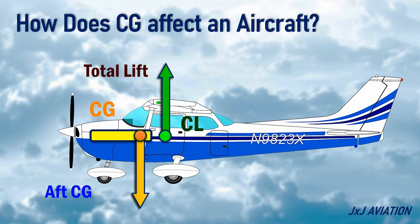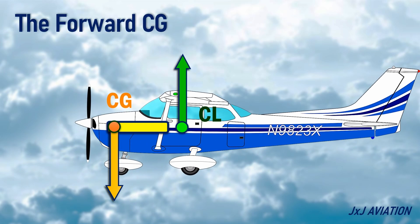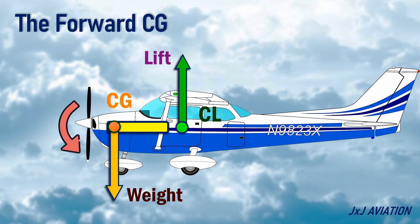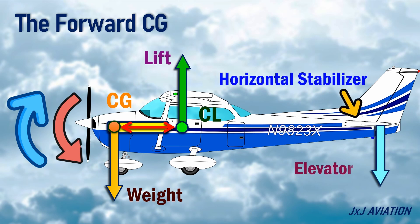Let's look at forward and aft CG in more detail. At the center of gravity, the weight is acting downwards, and at the center of lift, the lift is acting upwards. This force couple creates a nose-down moment. For an aircraft to fly straight and level, a downward force is required from the tail section. In case of a forward CG, a larger nose-down moment is created because the distance between the CG and CL increases. This moment should be balanced by a nose-up moment created by a downward force from the horizontal stabilizer or the elevator.